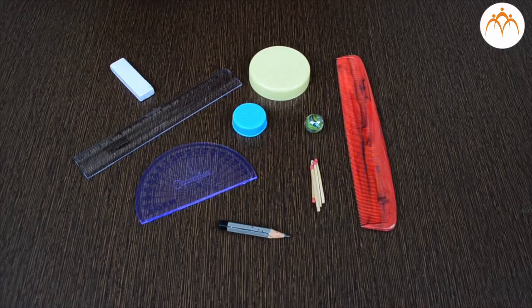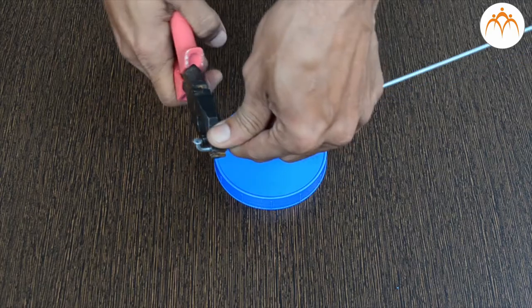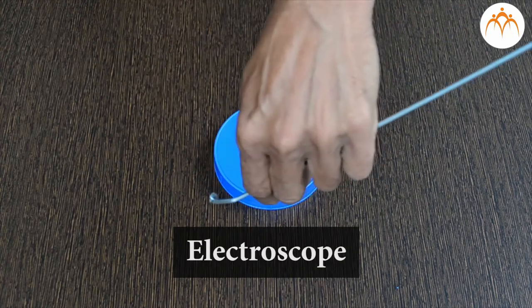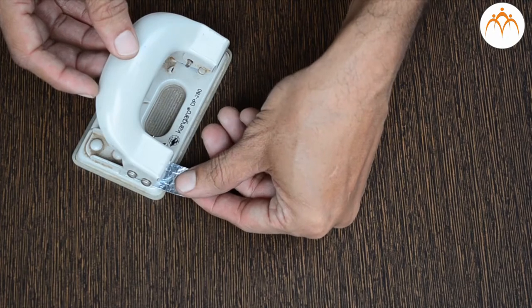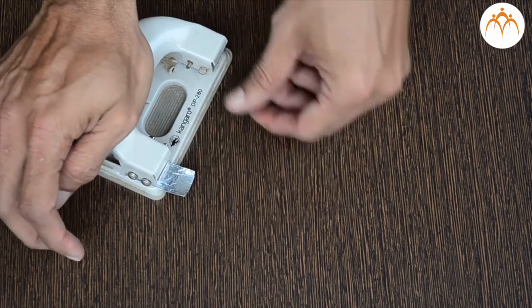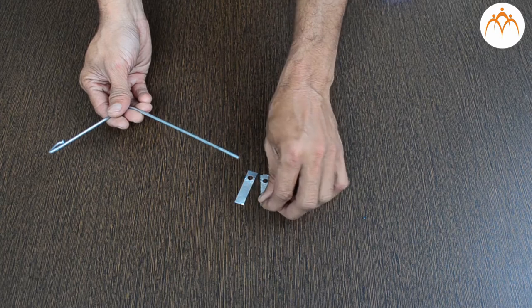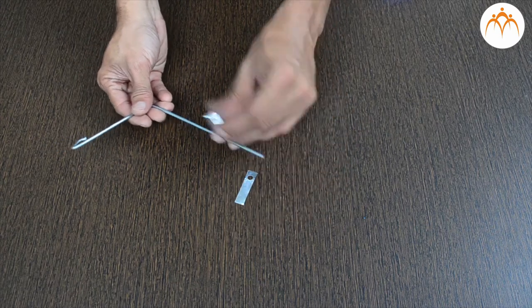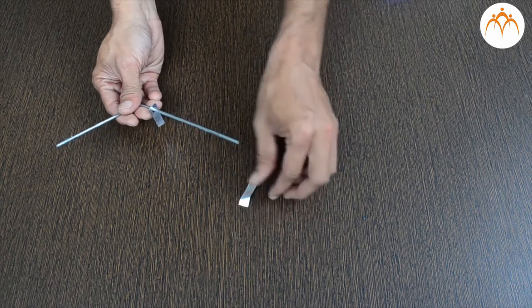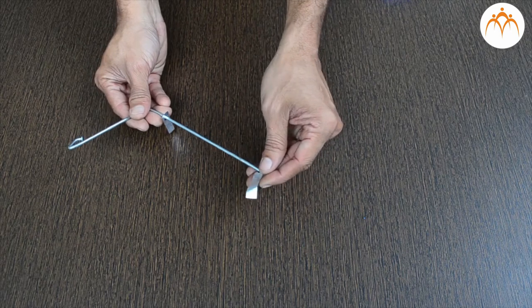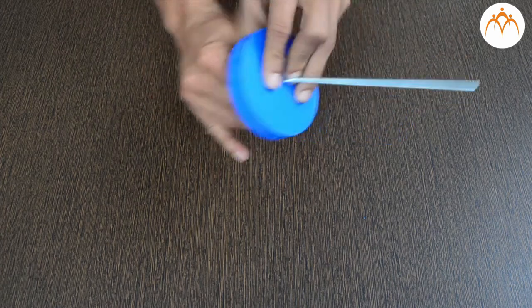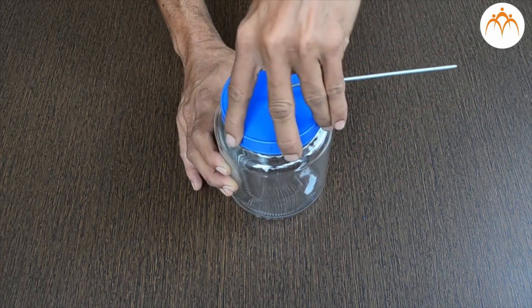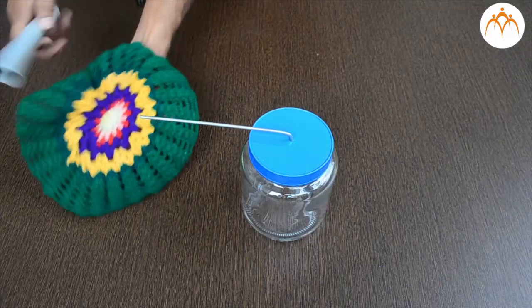How will you detect if any object is charged or not? We can build a simple device called an electroscope. Let us cut this aluminum foil into thin strips and make a small hole. A small hole is made in the bottle cap and a cycle spoke is inserted through the same. Now let us place these two strips of aluminum on the cycle spoke. We will close the lid of the glass bottle.